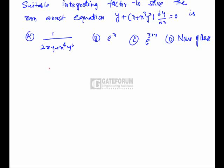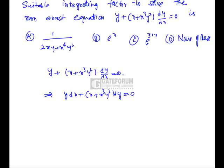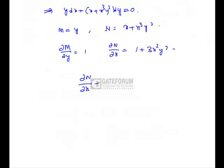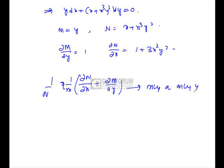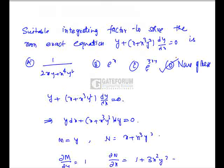The given non-exact differential equation is y + (x + x³y²)(dy/dx) = 0, which can be written as y dx + (x + x³y²) dy = 0. Here M = y and N = x + x³y². Computing ∂M/∂y = 1 and ∂N/∂x = 1 + 3x²y². Since (∂N/∂x − ∂M/∂y) divided by either M or N is not a function of only x or only y, it is not in any standard form and we cannot find an integrating factor. So the answer is none of these.